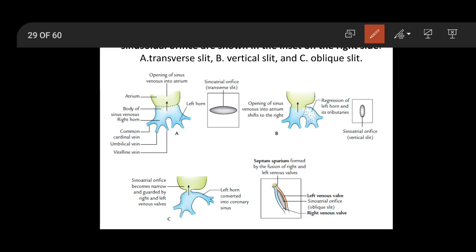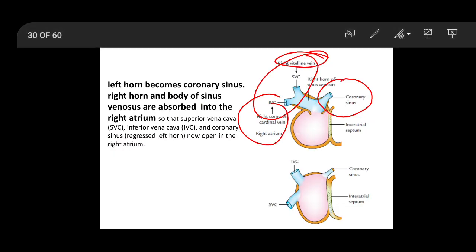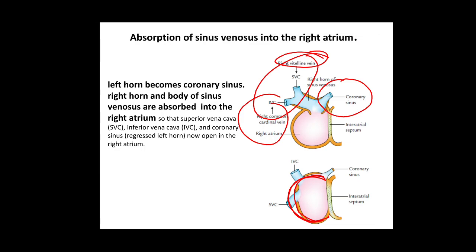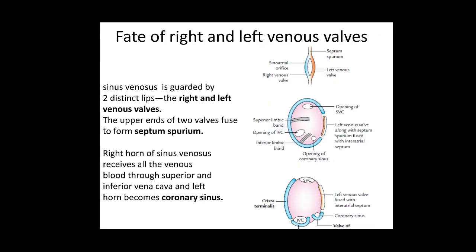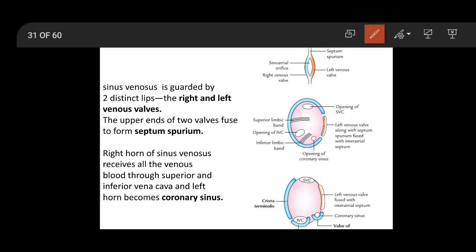The sinoatrial orifice is guarded by this oblique slit. It has got two walls — the left venous wall and the right venous wall — and in the upper part they fuse together and form the septum spurium, which is attached to the roof of the atrium. Now the right venous wall gets elongated and is converted into a C-shaped ridge. The C-shaped part will form different parts of the right atrium. The right venous wall is divided by two limbic bands: the superior limbic band and the inferior limbic band.